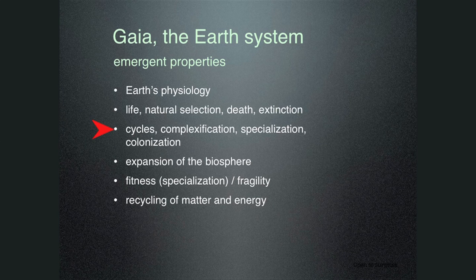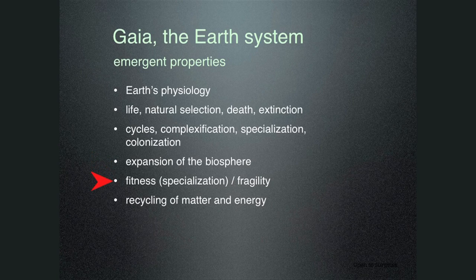Systems like Gaia also have cycles — they complexify and promote specialization and colonization. Part of this complexification is to develop new traits that allow the biosphere to expand, so we find organisms — particularly microorganisms — that can live at all extremes of pressure and temperature. Unlike the notion of survival of the fittest, this idea takes into consideration that to become fit for the environment you must specialize, but that the flip side of specialization is fragility. When the environment is perturbed, sometimes it's the survival of the generalist that actually happens.